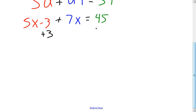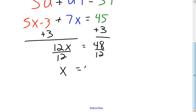So I'm going to add my 3 to both sides. Now I have the 5X and the 7X, which put together is going to put me at 12X. And this is 48, divide both sides by the 12, and I just found out that X equals 4.